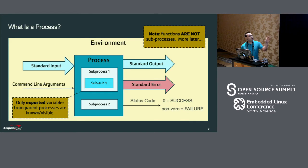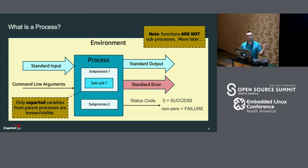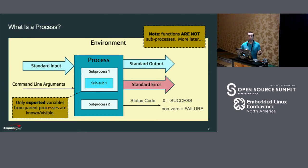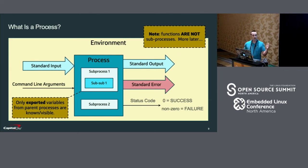Processes live in an environment with variables. Also, processes can have sub-processes — it's like a tree. Normally, a process can only see its own variables and not the variables of its parents unless those variables were exported from the parent process. I want to compare this with functions. Functions are not processes — they are not a sub-process of the current process. They have the same streams, command line arguments, and status code, but they are part of the current process. So any variables you set there are automatically visible to the parent, sharing the same namespace.